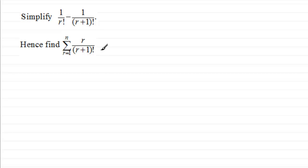Okay, welcome back if you had a go. So let's just start by copying the question down. First of all, you've got 1 over r factorial minus then 1 divided by all of (r+1), and then that's with the factorial there.